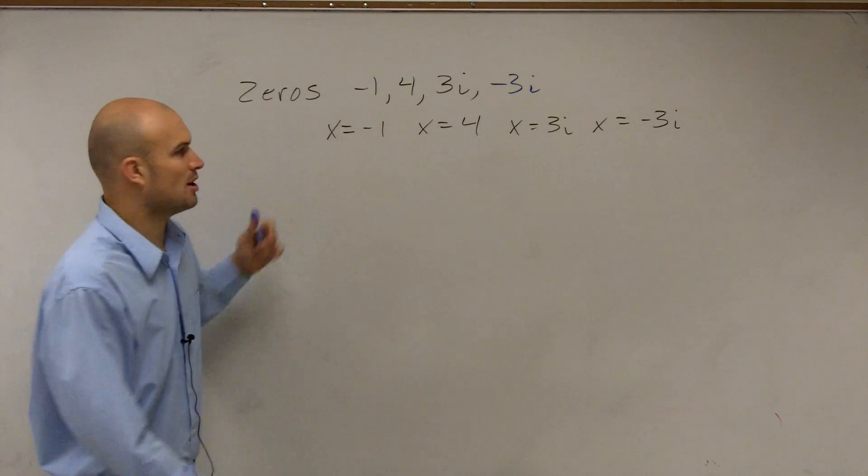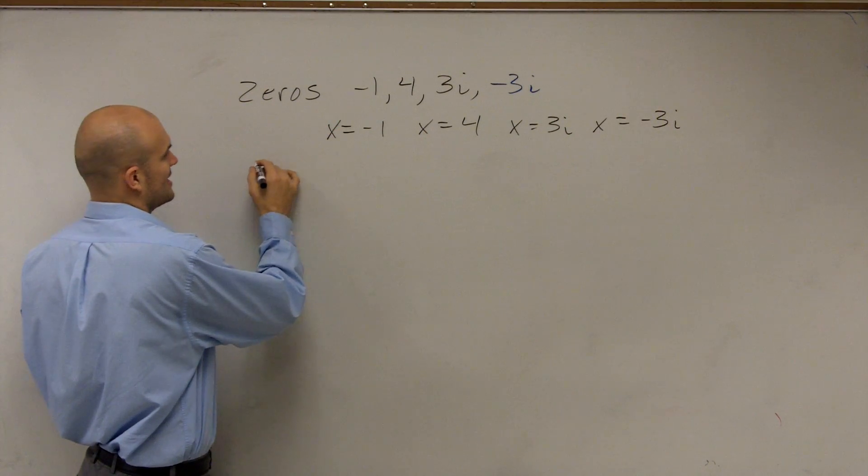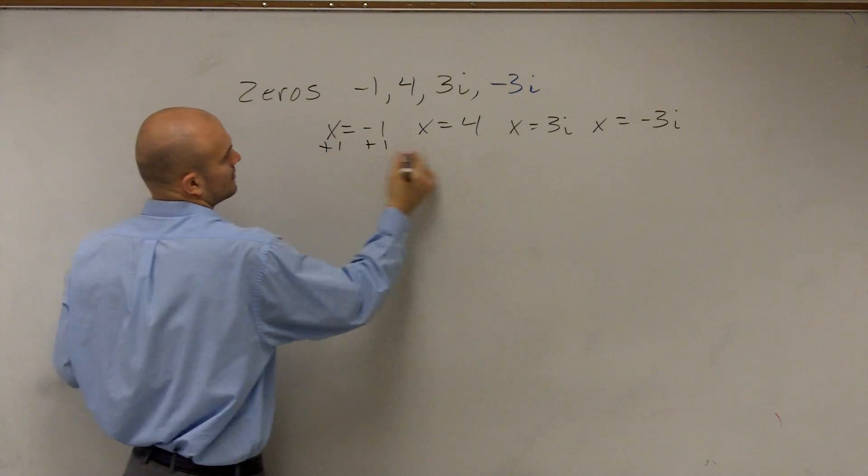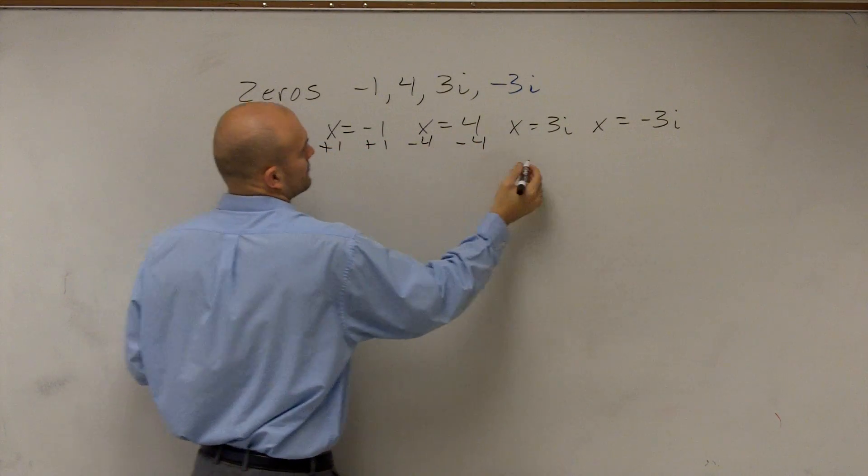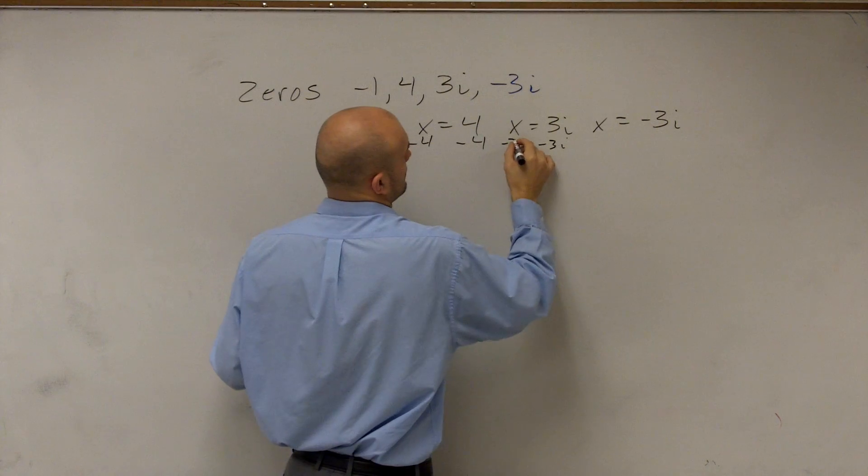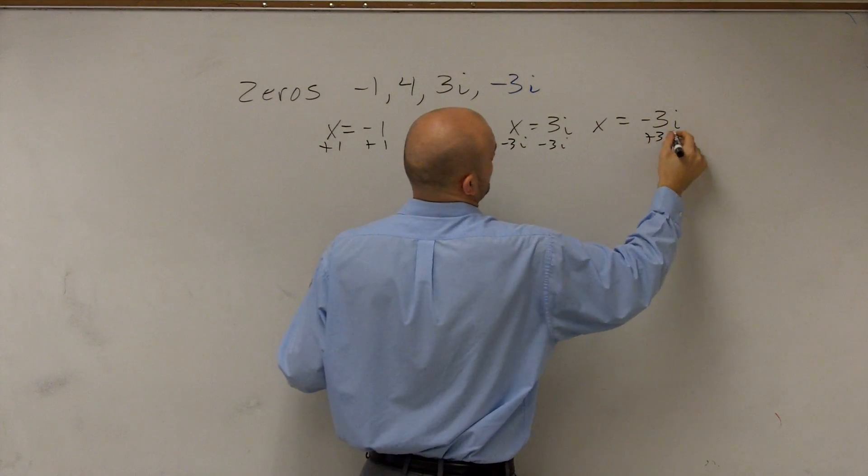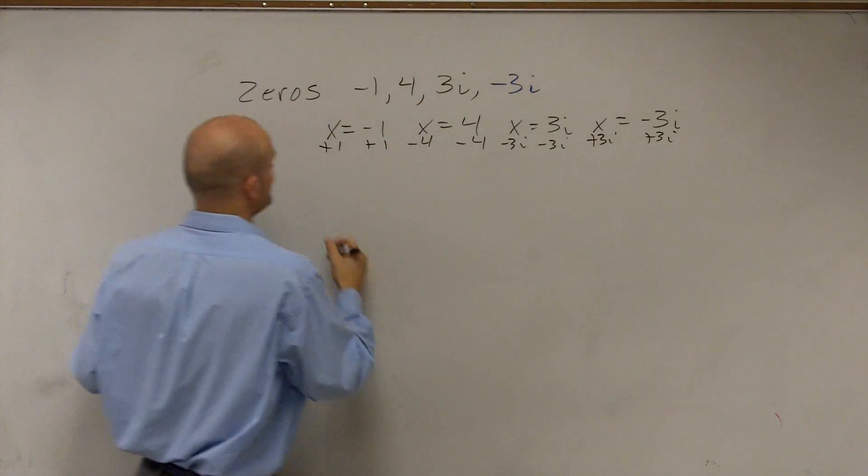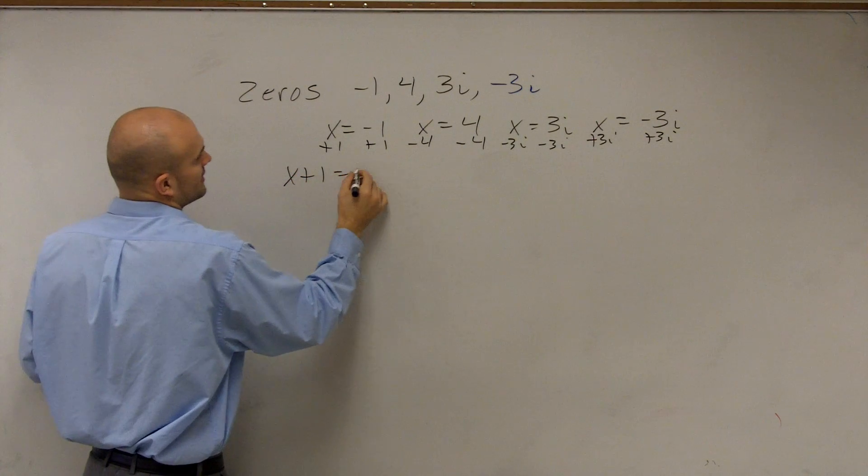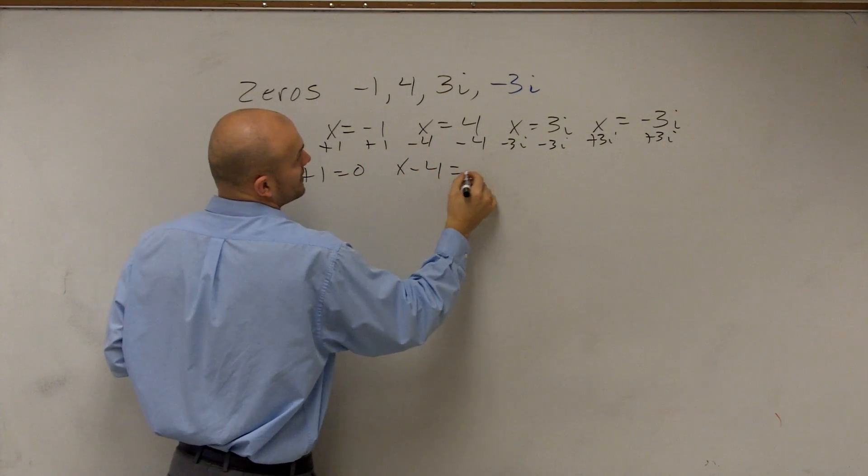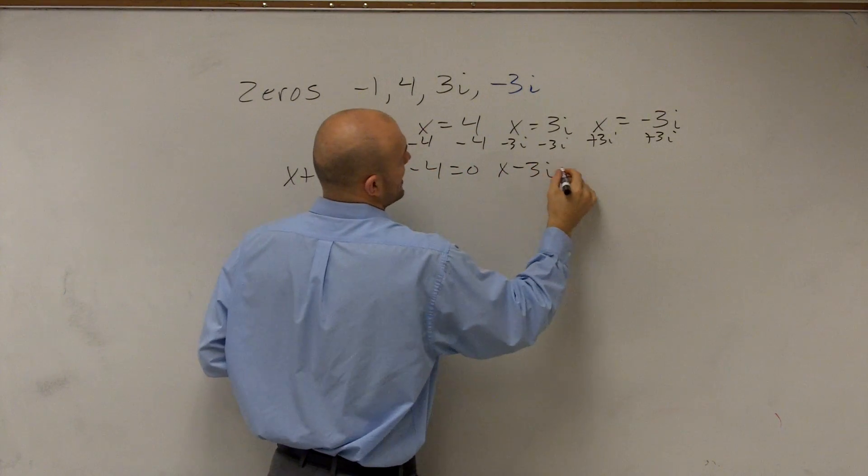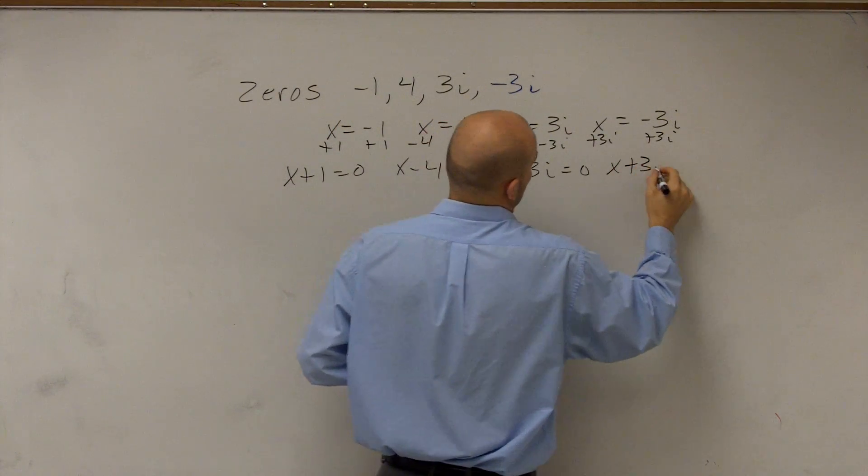Then I set them all equal to 0. So I could say, therefore, I can say x plus 1 equals 0, x minus 4 equals 0, x minus 3i equals 0, and x plus 3i equals 0.